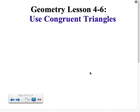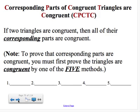As we look at section 4-6, we're going to look at using congruent triangles. We're going to build on the ideas we've already been discussing, using our shortcuts: SSS, SAS, ASA, AAS, and HL, and just looking at how we can use these things to prove different ideas.